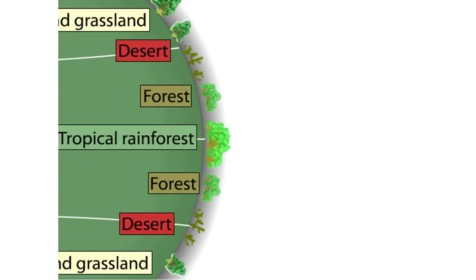The regional temperature differences around the world set up patterns of air movements called convection cells that shape Earth's climates.